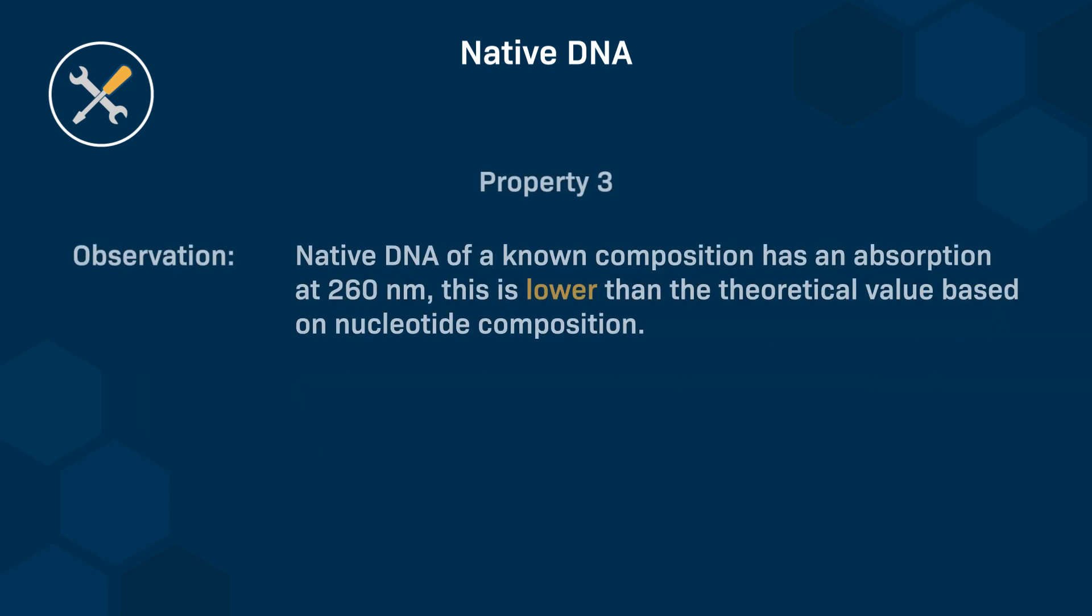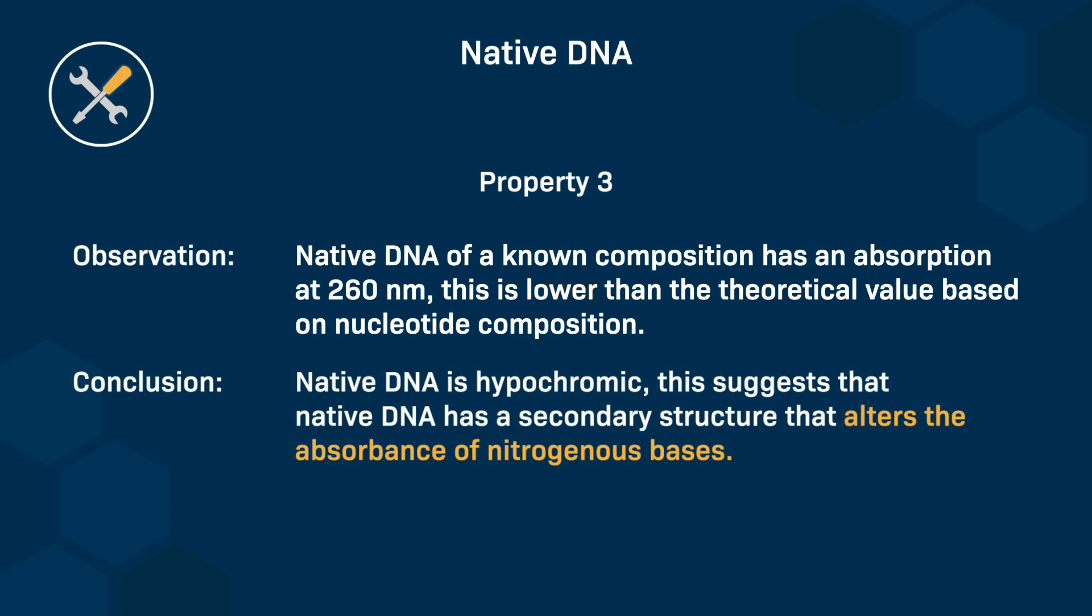The observation that native DNA has a lower absorbance at 260 nanometers compared to the theoretical value based on its nucleotide composition is a classic indication of the hypochromic effect. This effect occurs because the nitrogenous bases in native DNA are stacked and involved in interactions, which reduces their ability to absorb UV light. Even before the specific structure of DNA was fully understood, these interactions were known to influence UV absorbance.